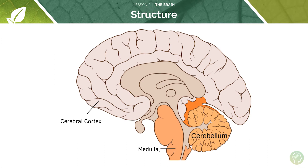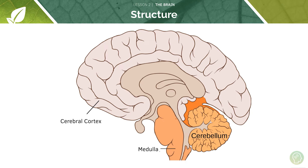Let's take a look at the structure of the brain. The cerebral cortex is really important in executive planning, decision making, movements and various other things. The medulla is involved in maintaining internal homeostasis, and the cerebellum is really important in directing movements. We'll be looking at more of this in a little bit.